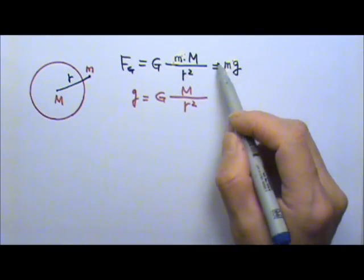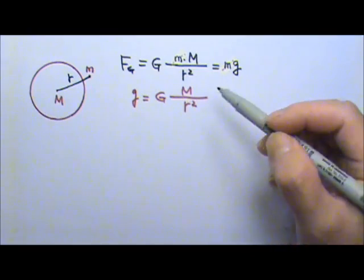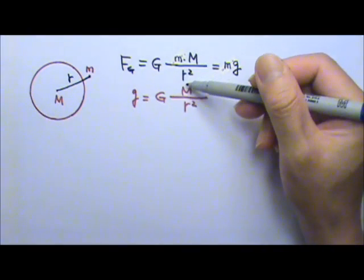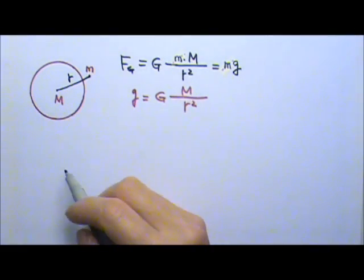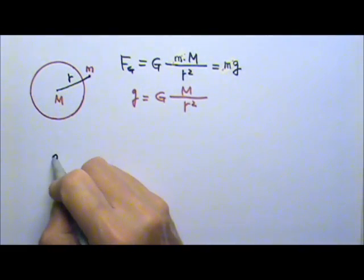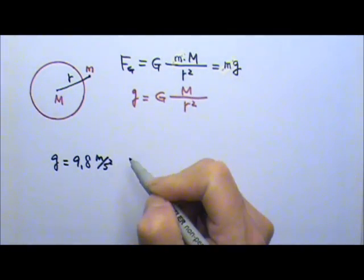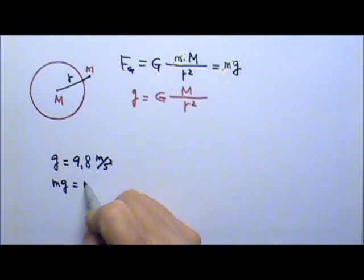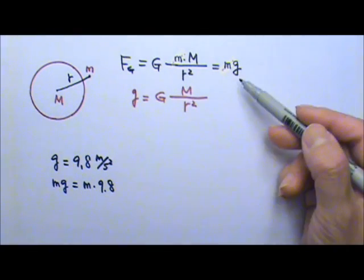This means the weight mg and the gravitational acceleration little g depend on the distance between little m and big M. But not too long ago, we learned that g is just 9.8 m/s², and to find the weight of an object you just multiply the mass by 9.8. What can you say about these discrepancies?